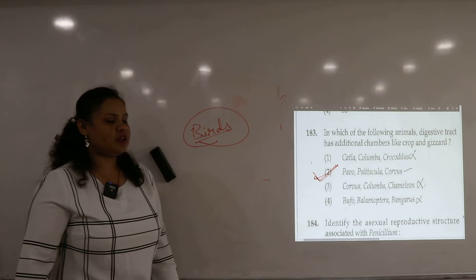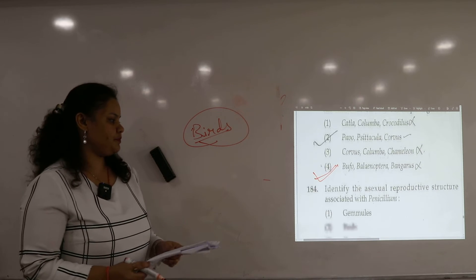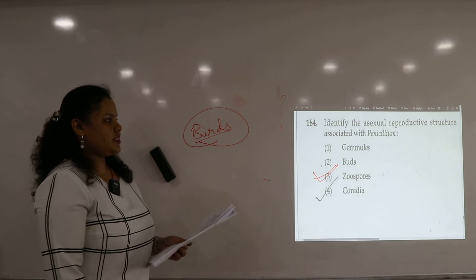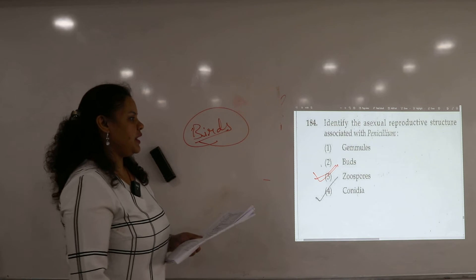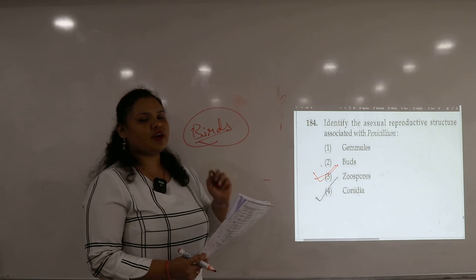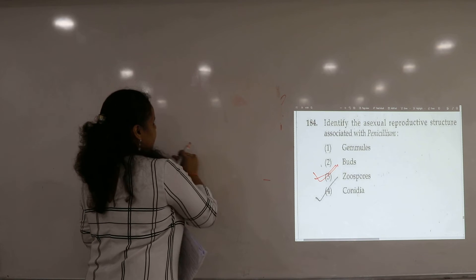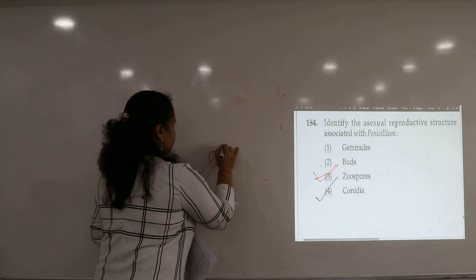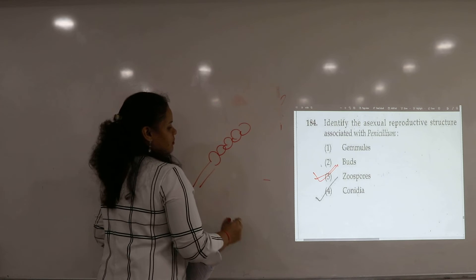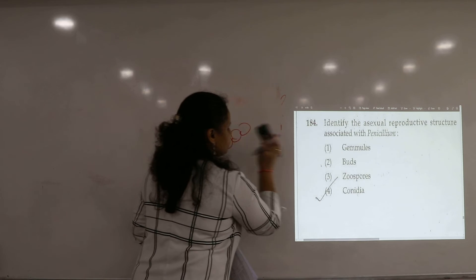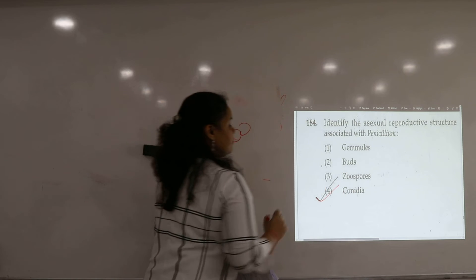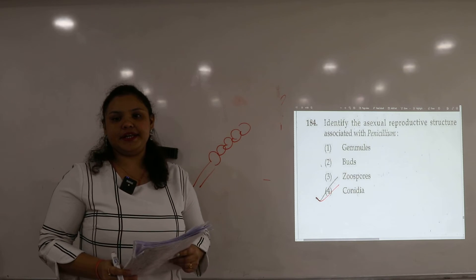Again a simple question, question number 184. Asexual reproductive structure of Penicillium. So Penicillium has asexual reproductive structures known as conidia and asexual reproductive spores are known as conidia.